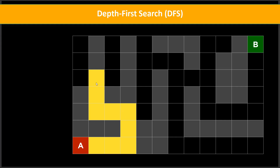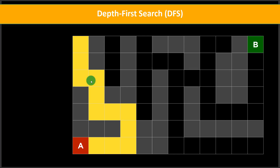If we keep continuing on this path, we reach a dead end — this is not our goal state and there is no other path to explore. So, we have to backtrack to the last state. Following depth first search with last-in-first-out, the last position on the stack was that previous decision point. Now we can go on the right hand side.